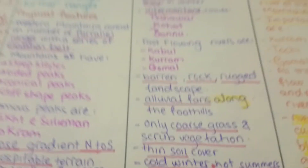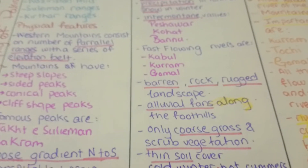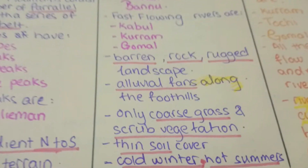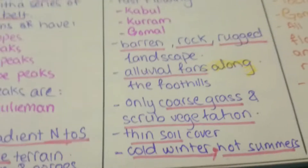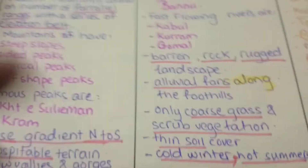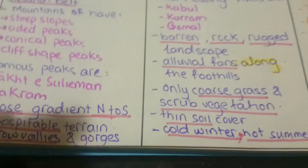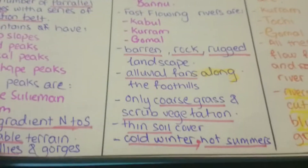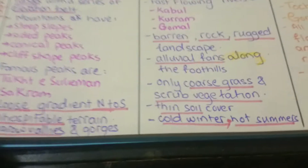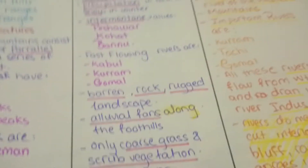Only coarse grass and scrub vegetation is present due to the inhospitable terrain and rugged landscape, with a thin soil cover. The climate features cold winters and hot summers.